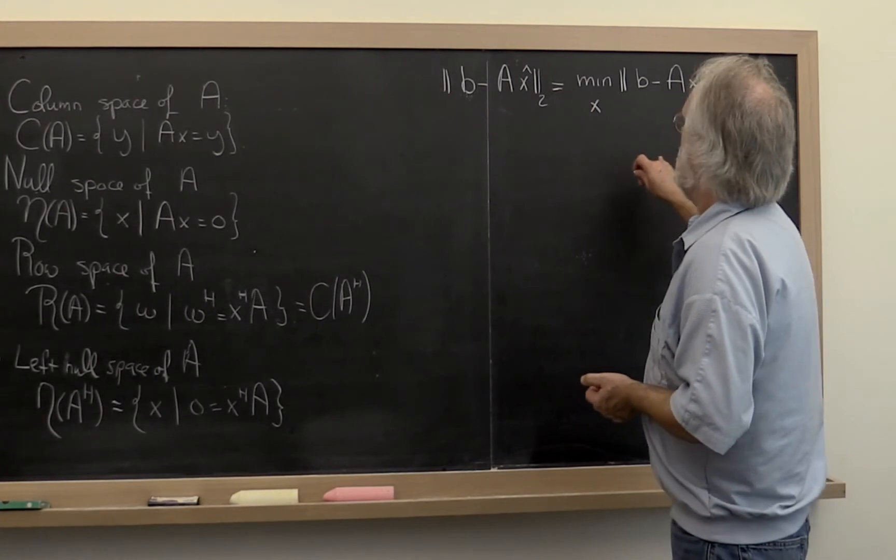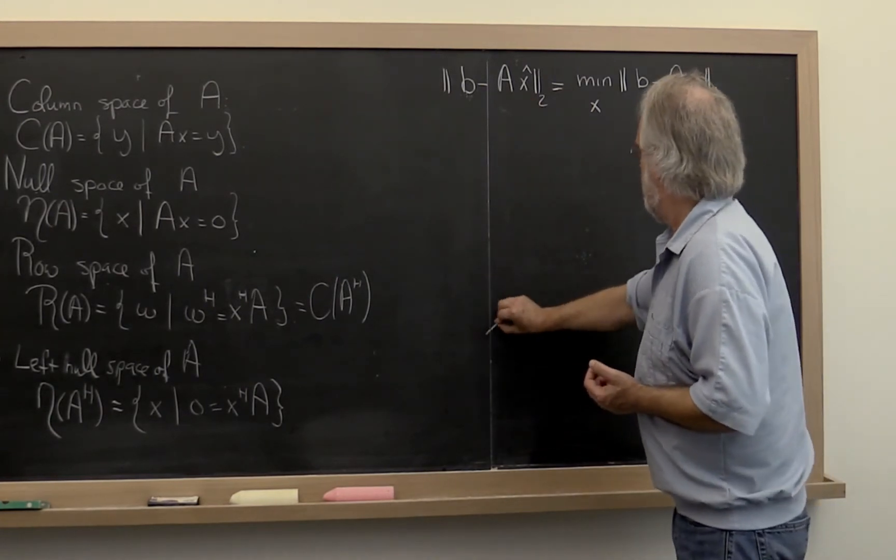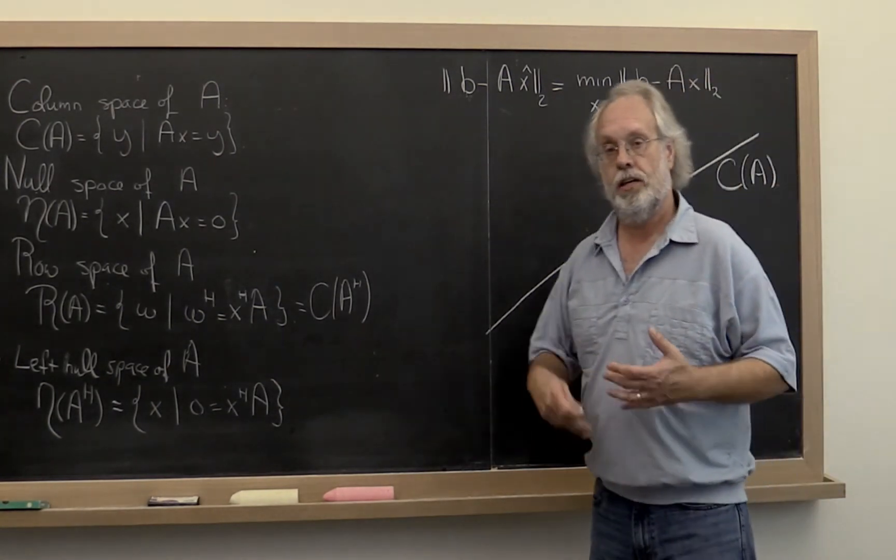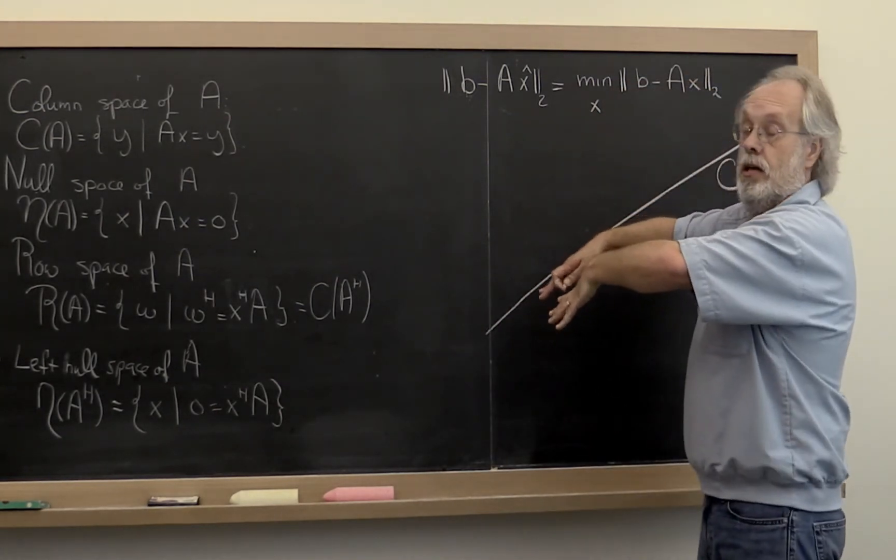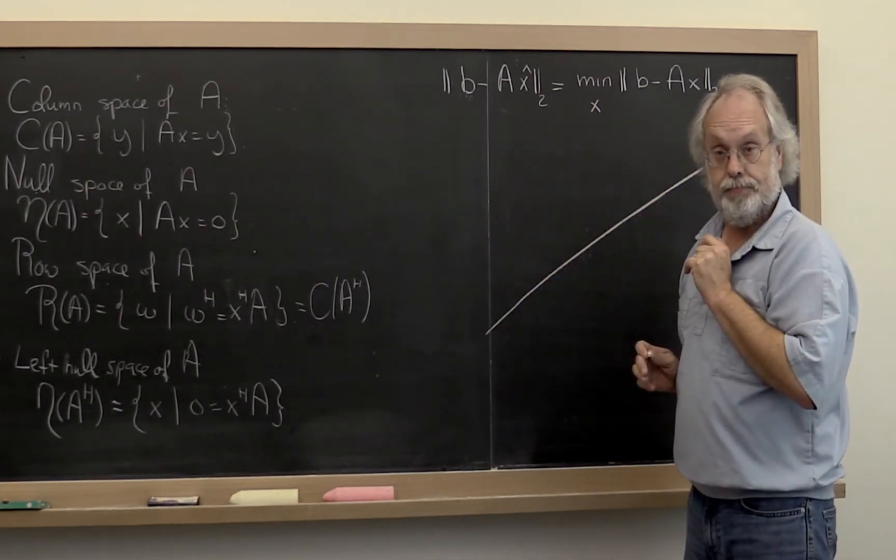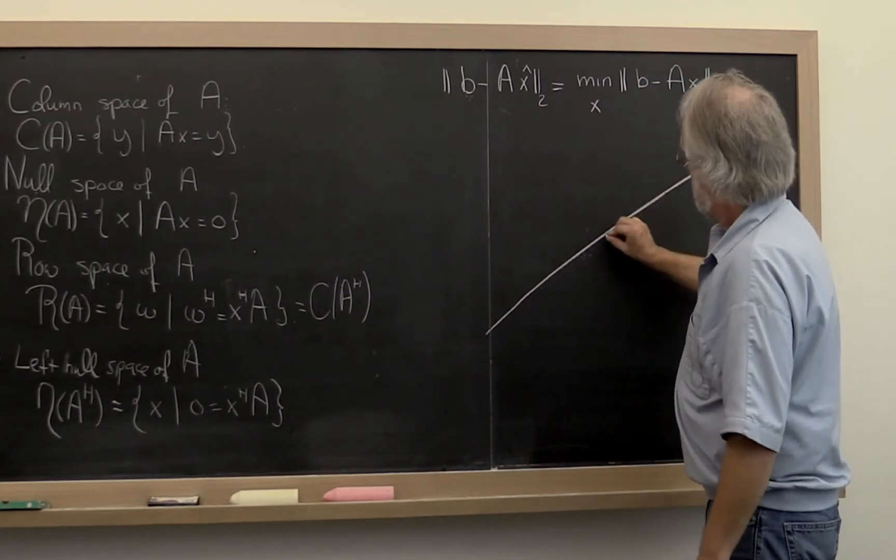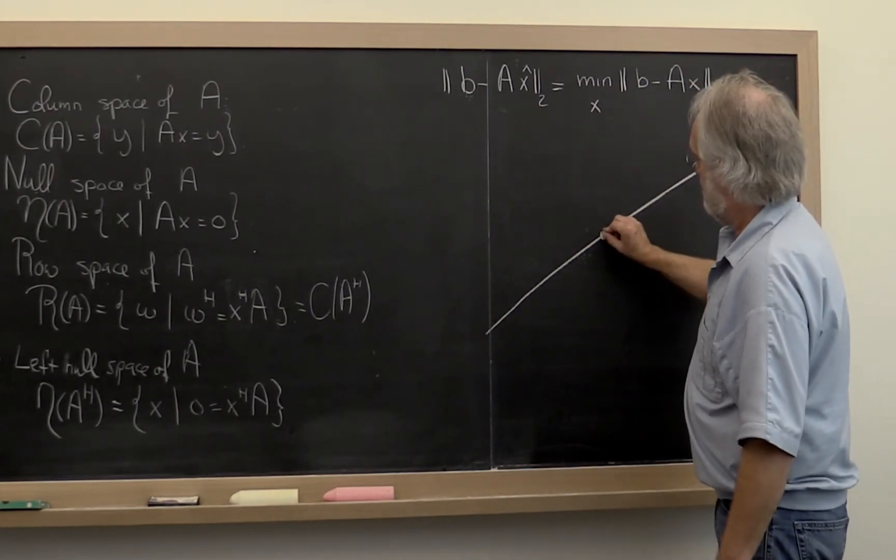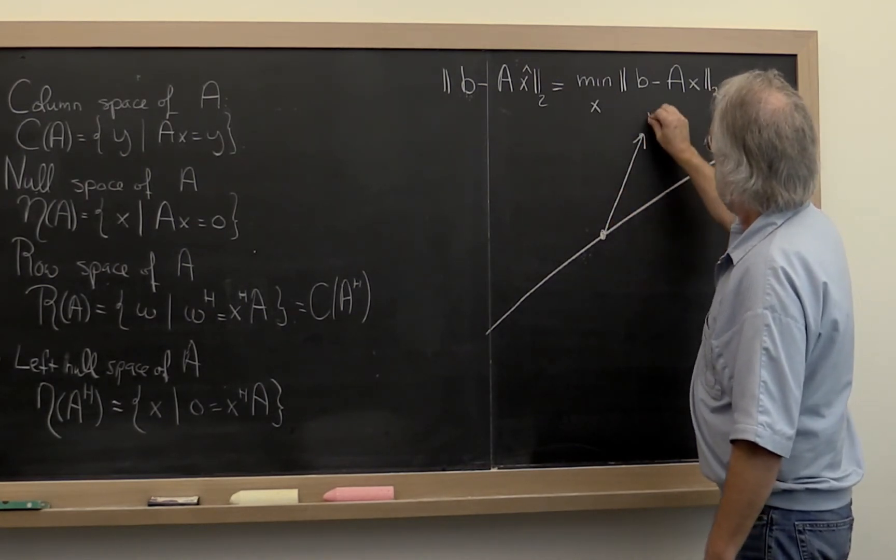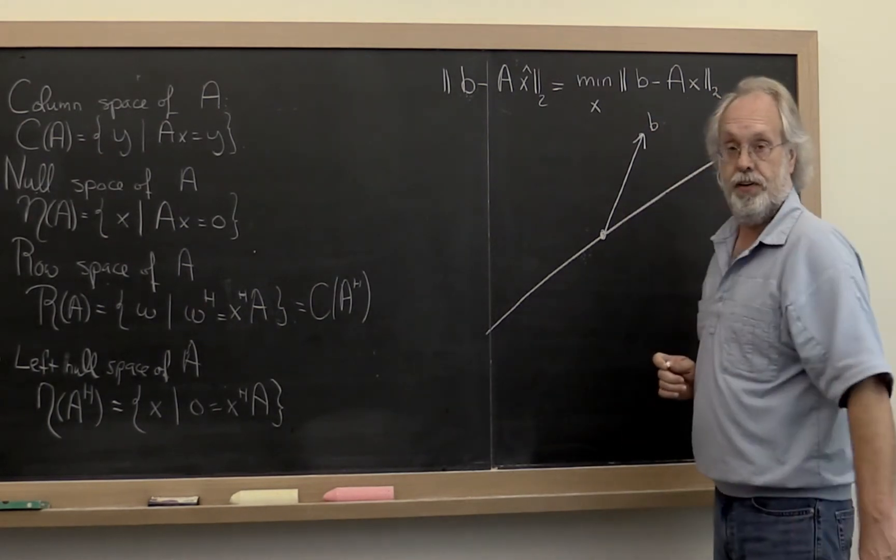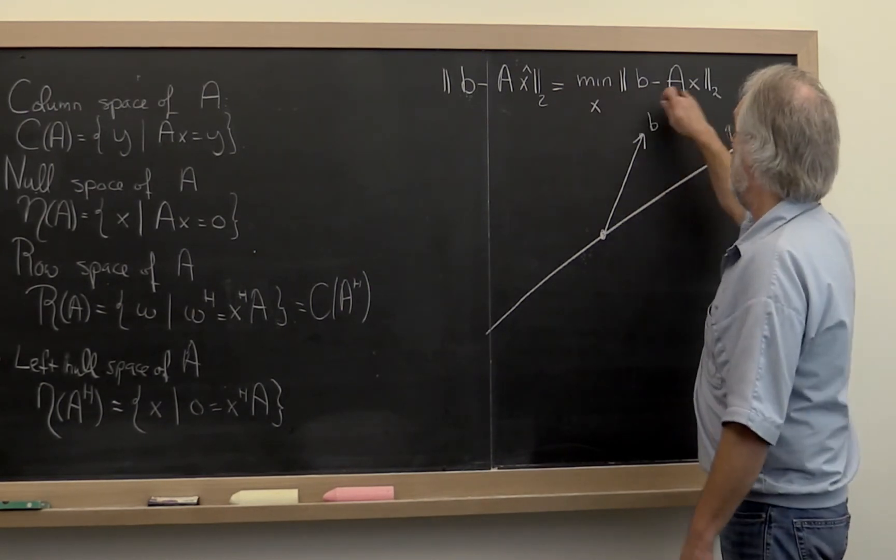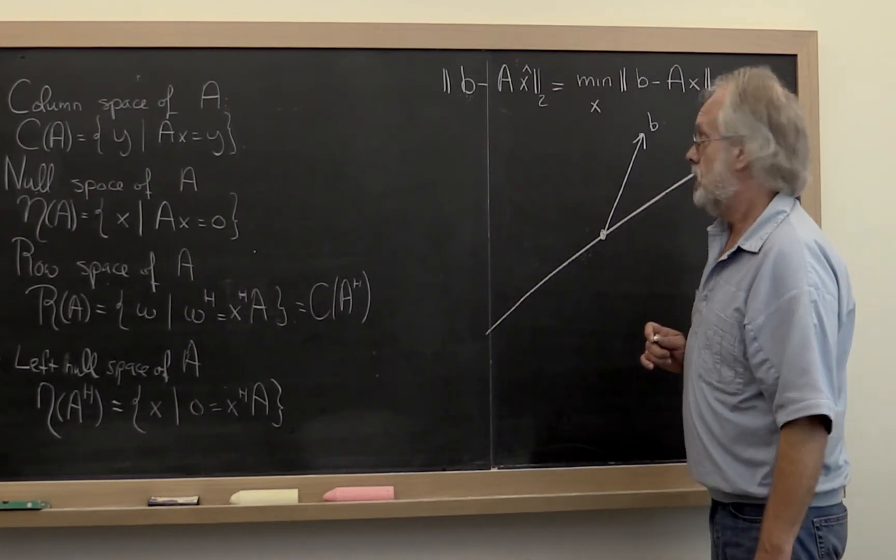Well, we know that a times x-hat is in the column space of a. So let's draw this as the column space of a where in the previous week we look at how we can always tilt a space so that we look at it from the edge so that it looks like a line. And what's really going on here is, let's put the origin in there somewhere just as the reference point. And what we have is we have a vector b that is not necessarily in the column space of a. Obviously if it is in the column space of a then we could exactly solve this problem. Then the minimum would be when this is equal to 0.